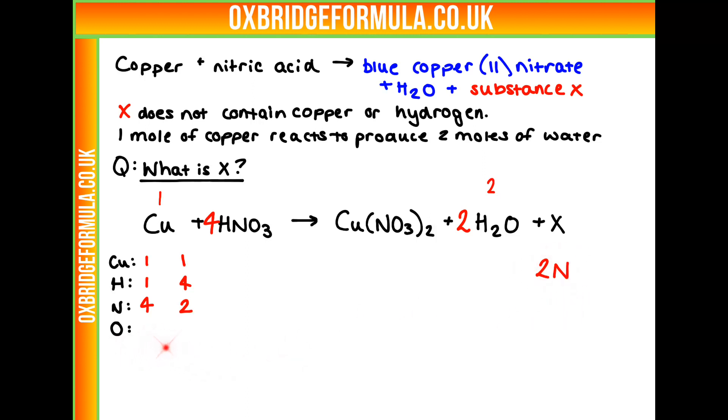And then finally, for oxygen, here on this side we have 12, and on this side we have one, two, three, four, five, six, seven, eight. So we're missing four. This X must also have four oxygens in it.